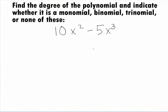In this example, we want to find the degree of the polynomial 10x to the 2nd power minus 5x to the 3rd power and indicate whether the polynomial is a monomial, binomial, trinomial, or none of these.